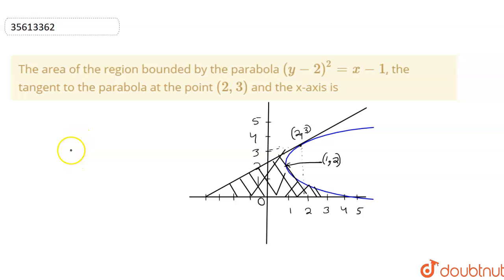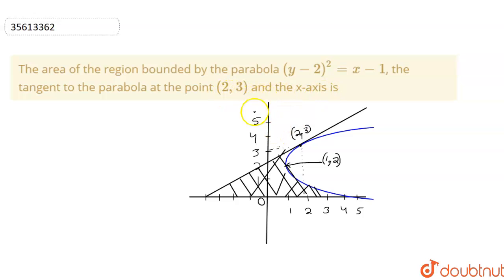Hello friends. Our question is: find the area of the region bounded by the parabola (y−2)² = x−1, the tangent to the parabola at the point (2, 3), and the x-axis. As you can see, I have made a figure here.